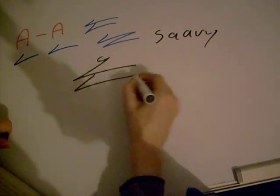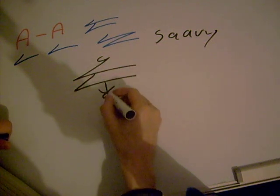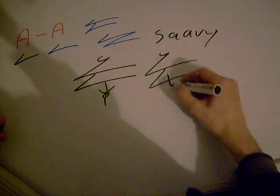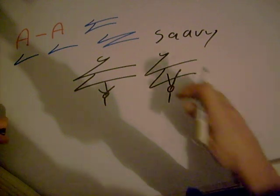S, A, A, V, Y. We could bring the V right into the A, like so. Savvy.